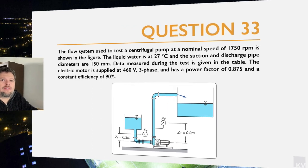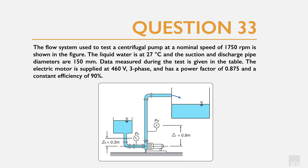Let's examine the question itself. We are told that the pump is operating at 1750 revs per minute in its transfer of water from a sump to a discharge tank. The diameters of the suction pipe and the delivery pipe are 150 millimeters each. Some of the data has been tabulated for various tests. The electric motor is a three-phase device running at 460 volts, with a power factor of 0.875 and an overall efficiency of 90%.